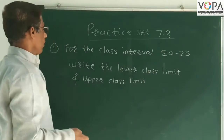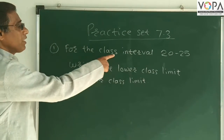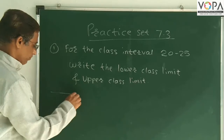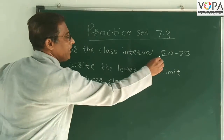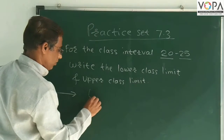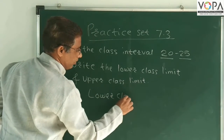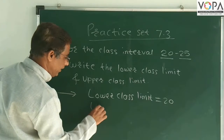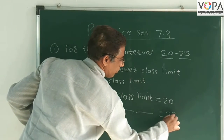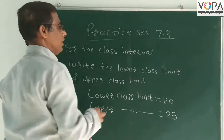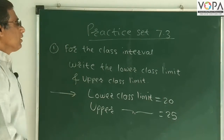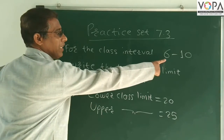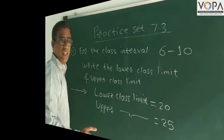Practice 7.3, first example: for the class interval 20 to 25, write the lower class limit and upper class limit. The lower class limit is 20 and the upper class limit is 25. Similarly, if the class interval is 6 to 10, then the lower class limit is 6 and the upper class limit is 10.